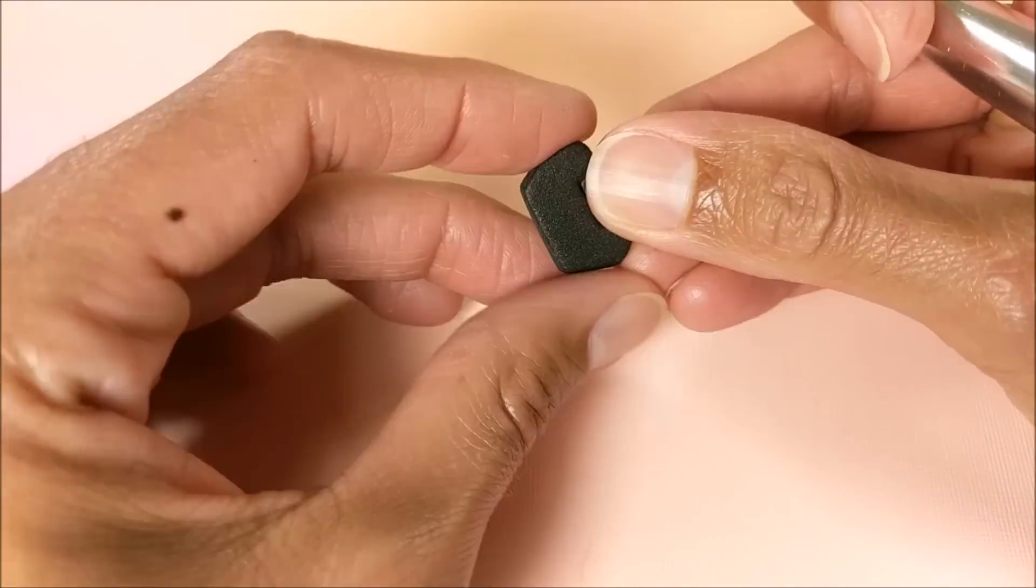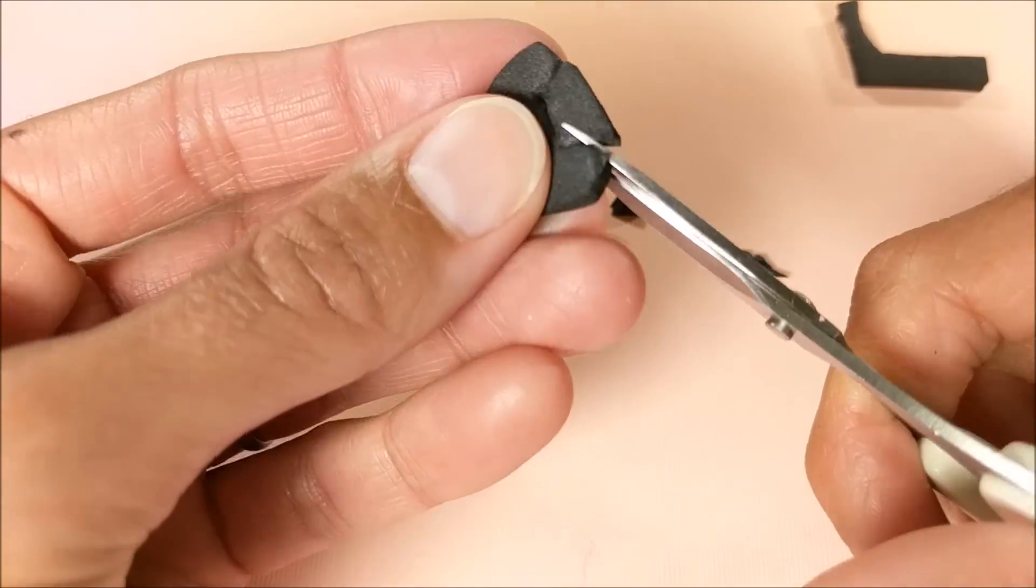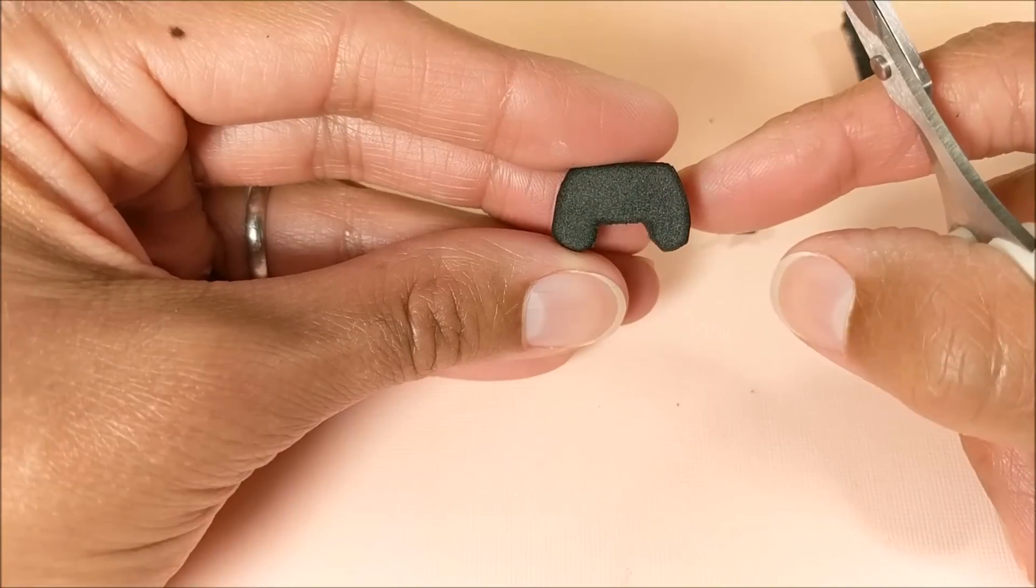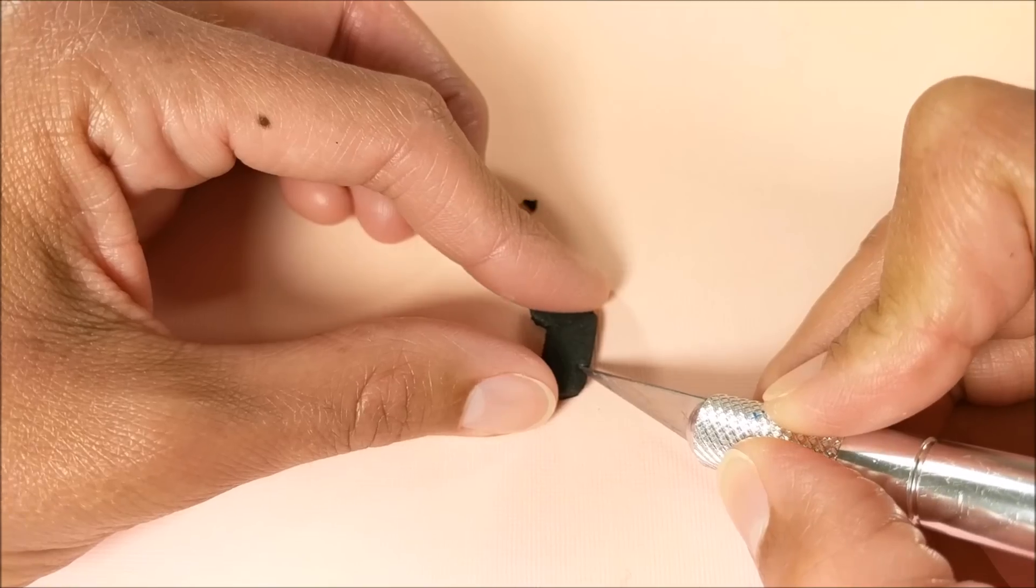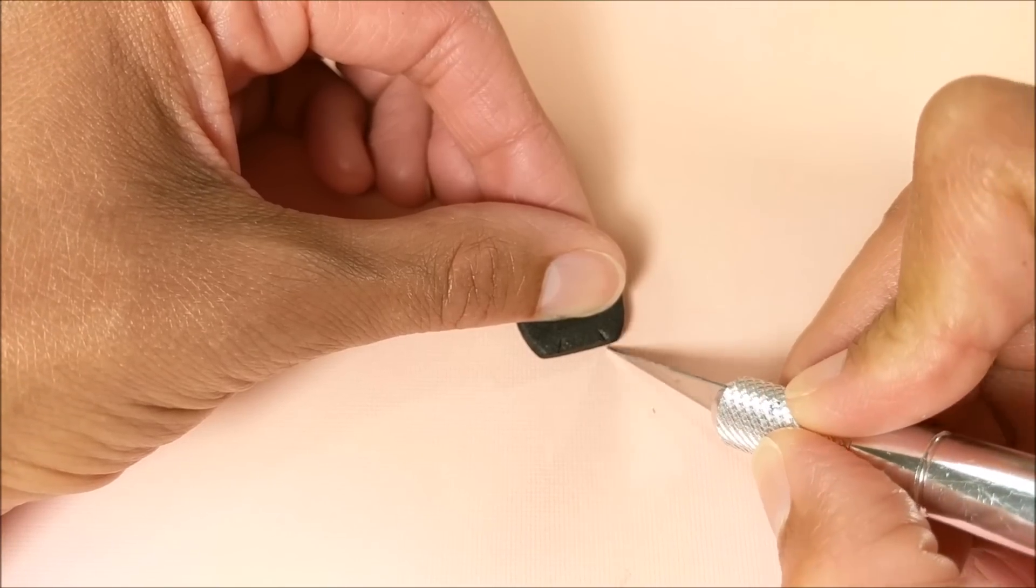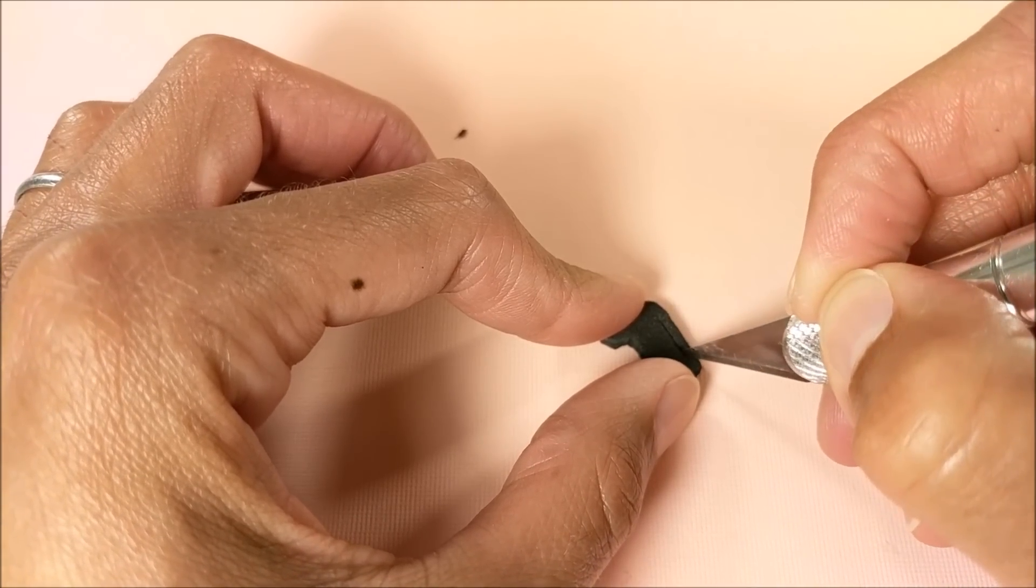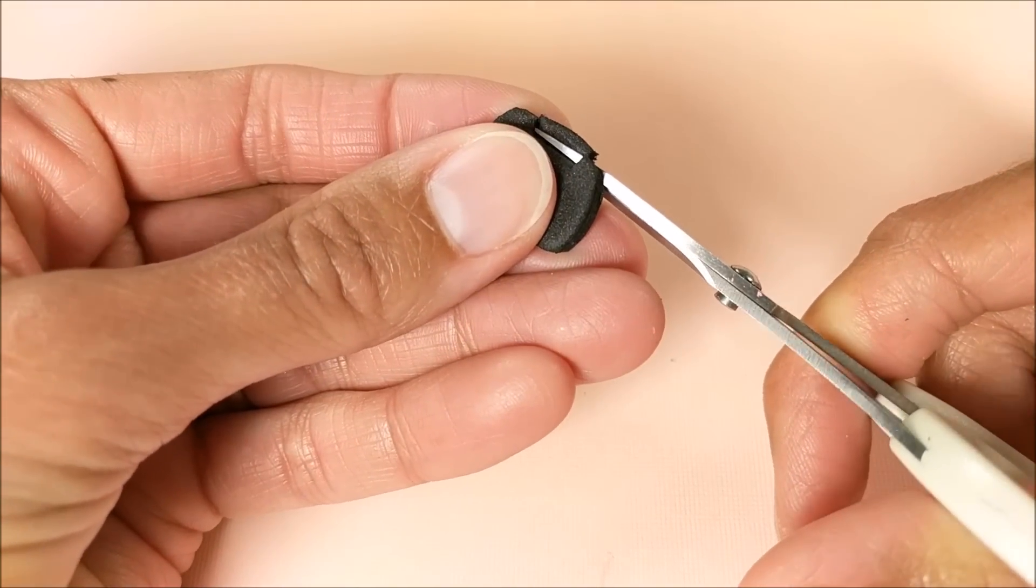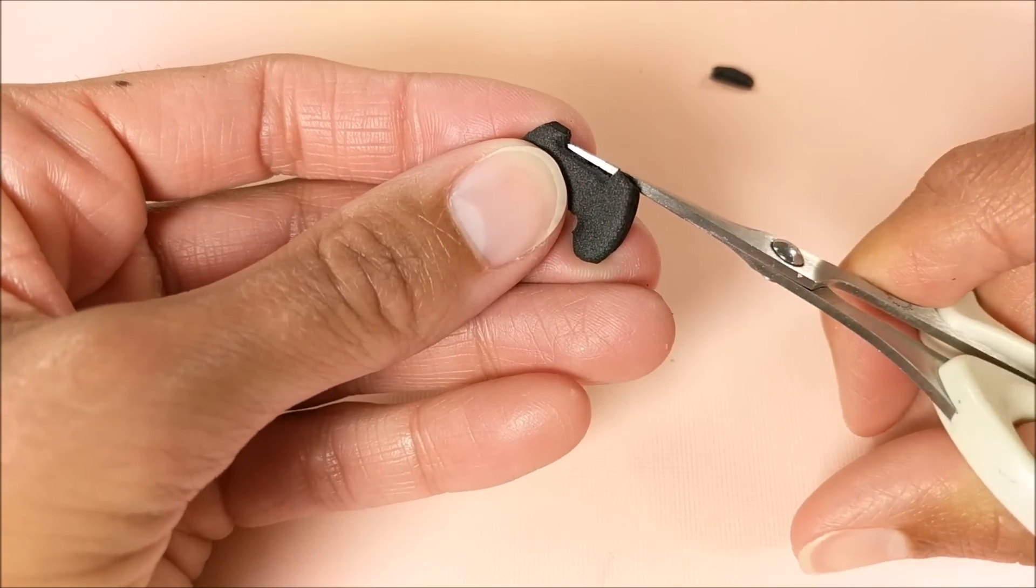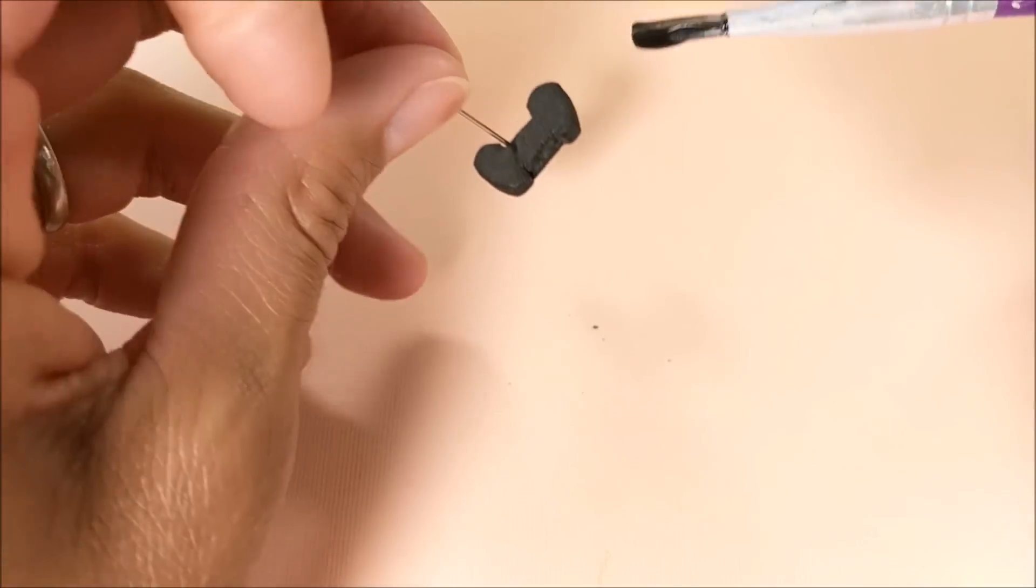Just using my X-Acto knife on the straight part. And again, along the top. And just cutting away any little extra bits. Then painting.